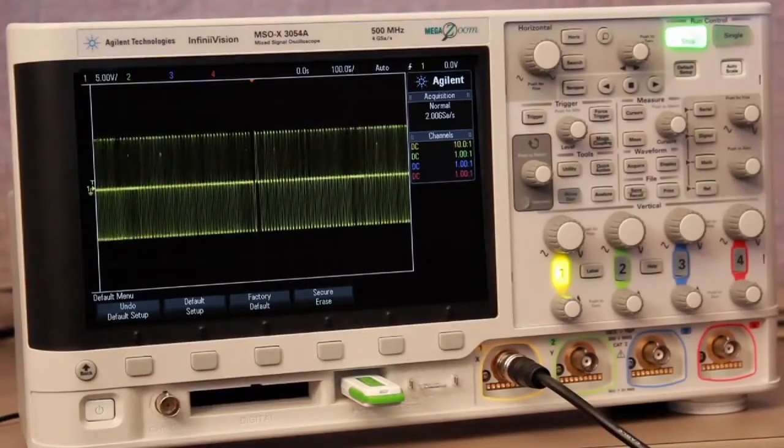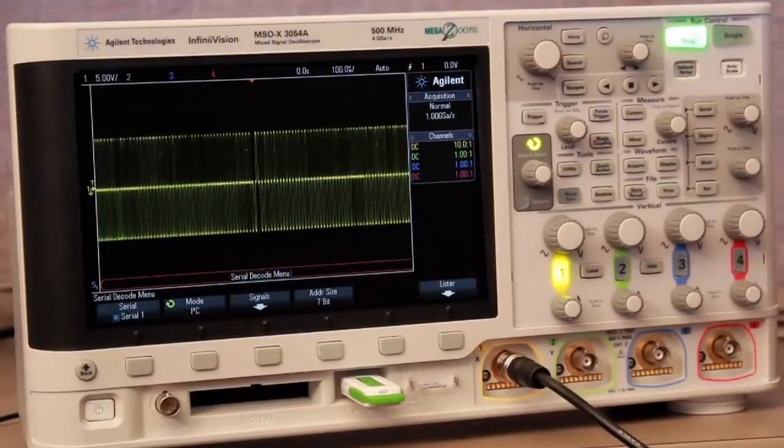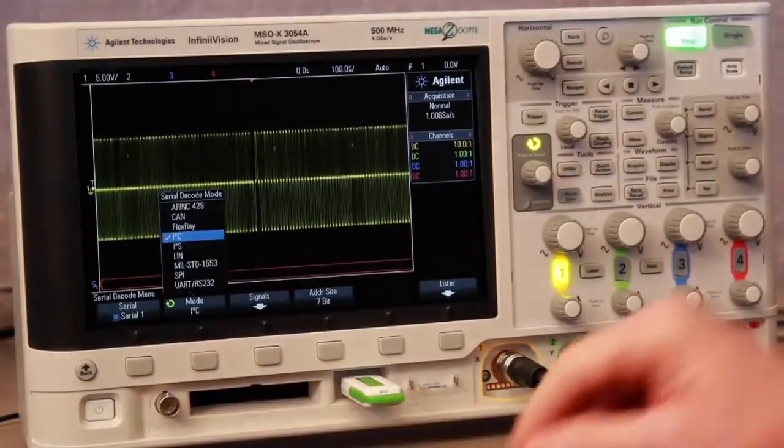To decode this bus, first press the serial front panel key, and then select the ARINC 429 decode mode.